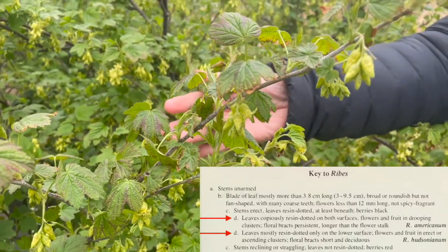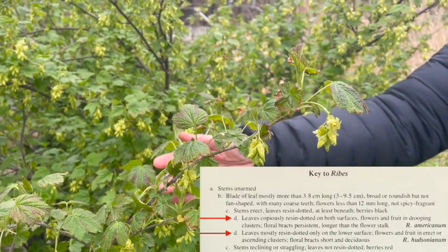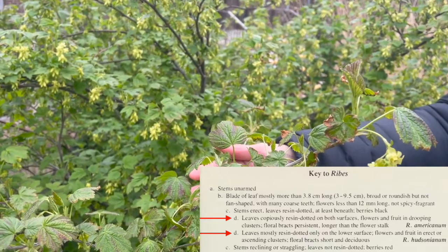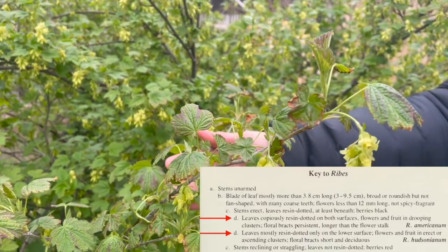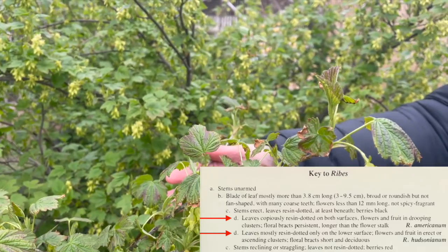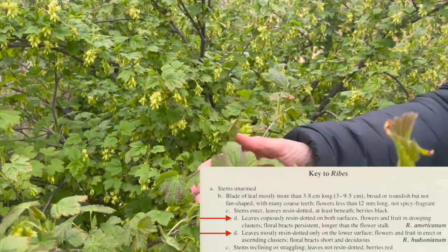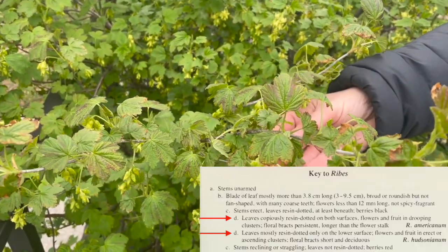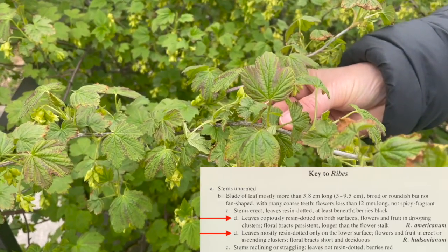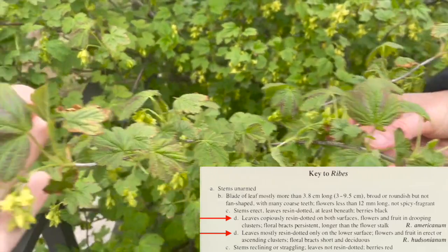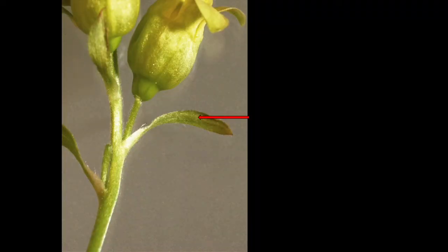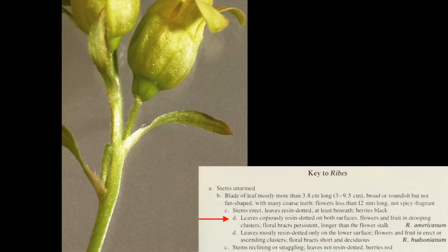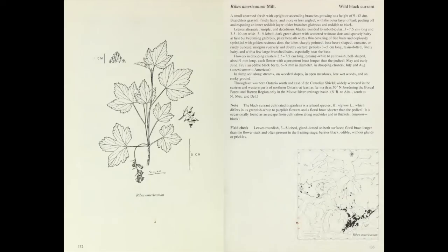Option D: leaves copiously resin dotted on both surfaces, flowers and fruit in drooping clusters, floral bracts persistent, longer than the flower stalk. Or D: leaves mostly resin dotted only on the lower surface, flowers and fruit in erect or ascending clusters, floral bracts shorter and deciduous. Both surfaces of these leaves are resin dotted, the flowers and fruit are in drooping clusters, and the floral bracts are longer than the flower stalks. So this brings us to Ribes americanum. Here we can read the description and look at the map and sketch to confirm that this is our species.